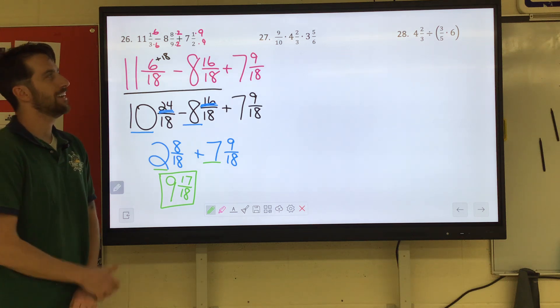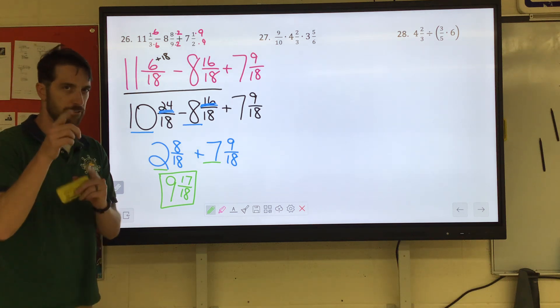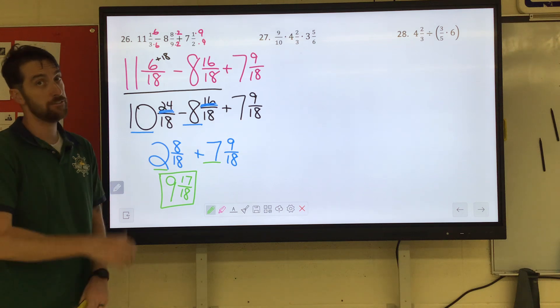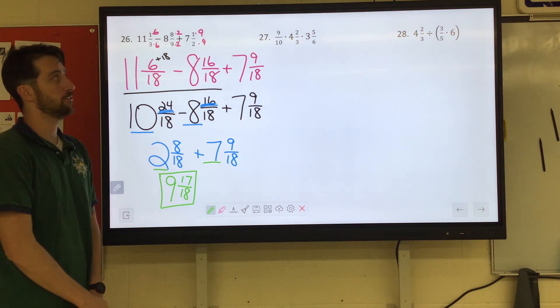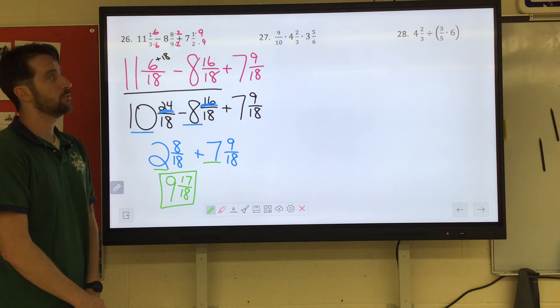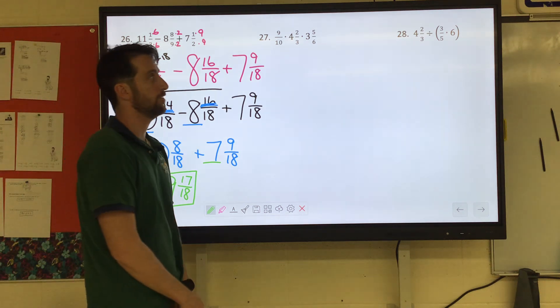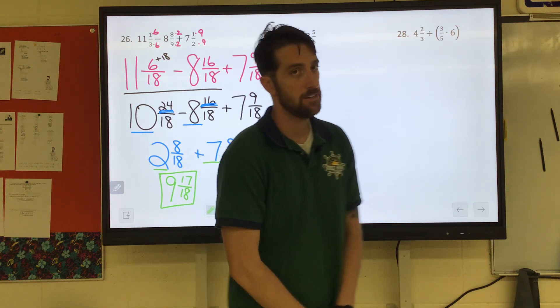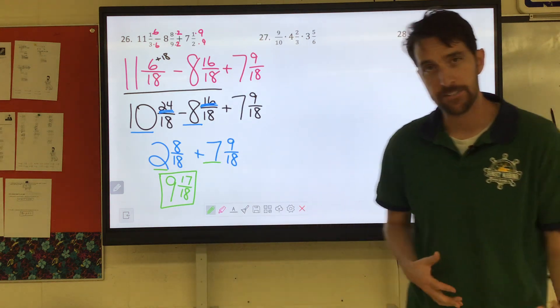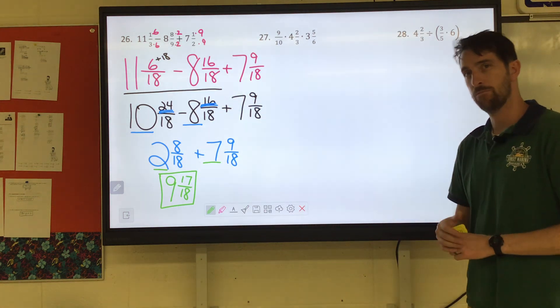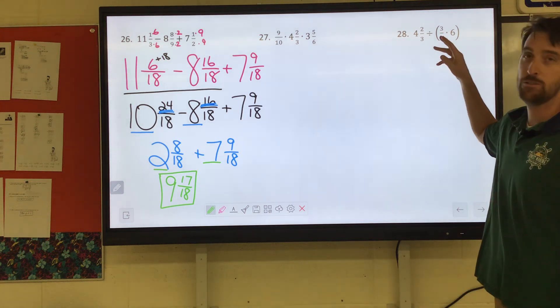I'm feeling wild and I'm going to leave 27 for you guys to do. Because I believe you can do it. You're very smart when you try. We are going to do number 28. If you look, we have 4 and 2 thirds divided by 3 fifths times 6. We've got multiplication. We've got division. We're going to have to go improper fractions.